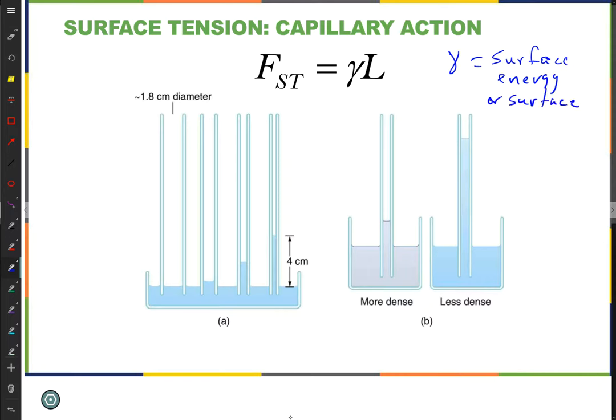The reason it has that word surface tension is because it behaves like tension does. We learned that tension puts a force on an object where it leaves the object in the direction that it's leaving. Surface tension does the same thing. What's different about surface tension compared to regular tension is that regular tension is a one-dimensional thing in the direction the string is, whereas the surface tension is for a two-dimensional surface.